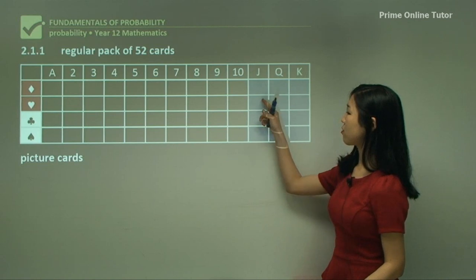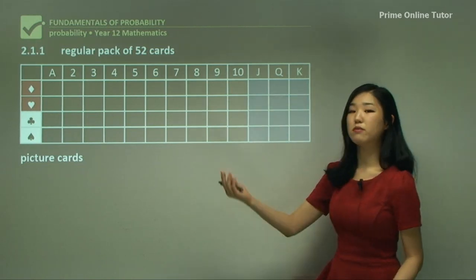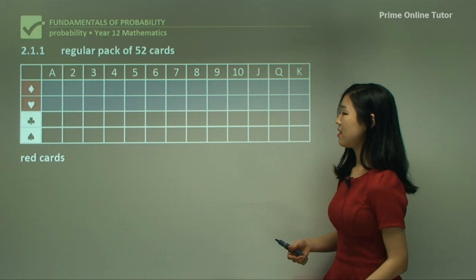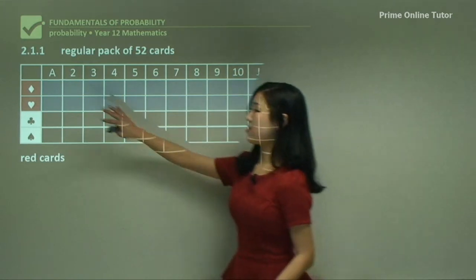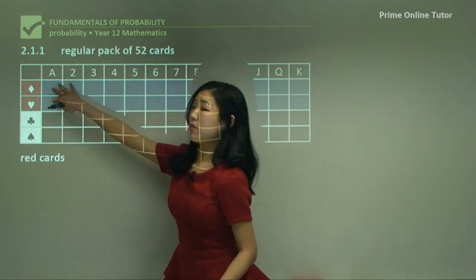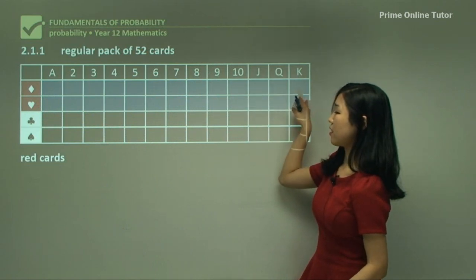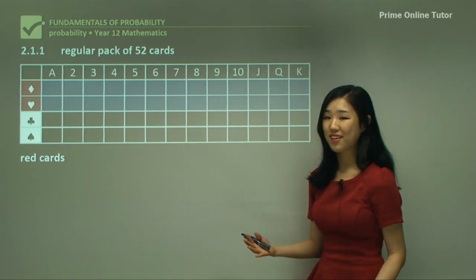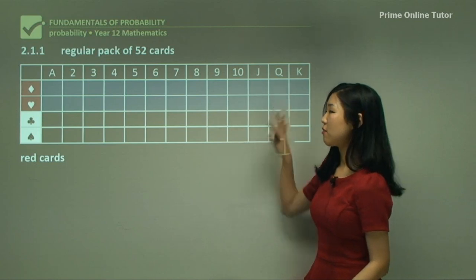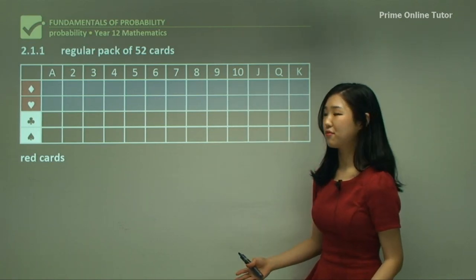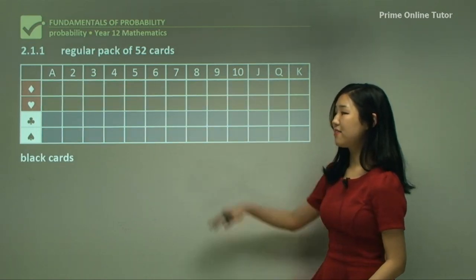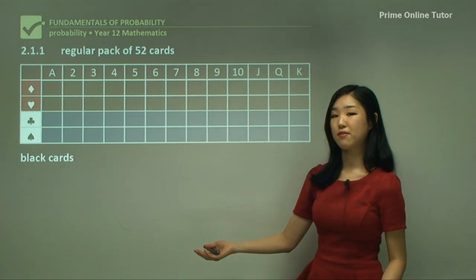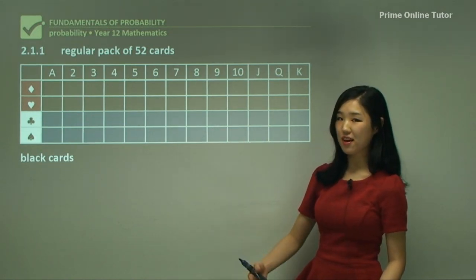The part colored in blue represents the picture cards — Jack, Queen, and King. That's 4 rows times 3 columns, so 12 picture cards in total. Red cards are just these two suits — diamond and heart — so that's exactly half the cards: 26 red. Black cards are the other two suits — clover and spade — so again exactly half, 26 black cards.